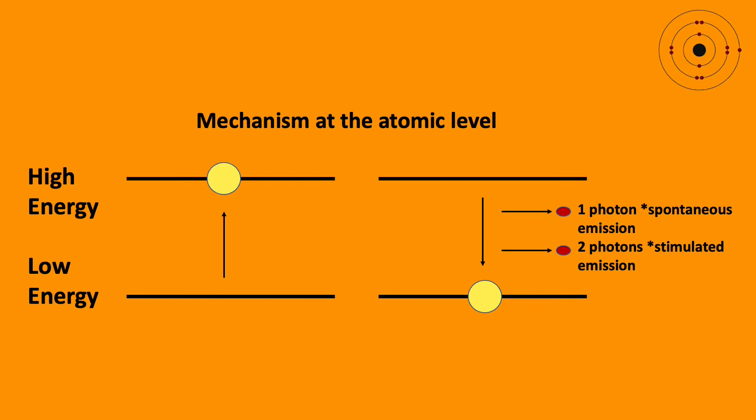So energy is applied to the atom causing electrons to move from the ground state to a high energy level and thus gain energy. This process is known as atomic excitation by the process of energy absorption.